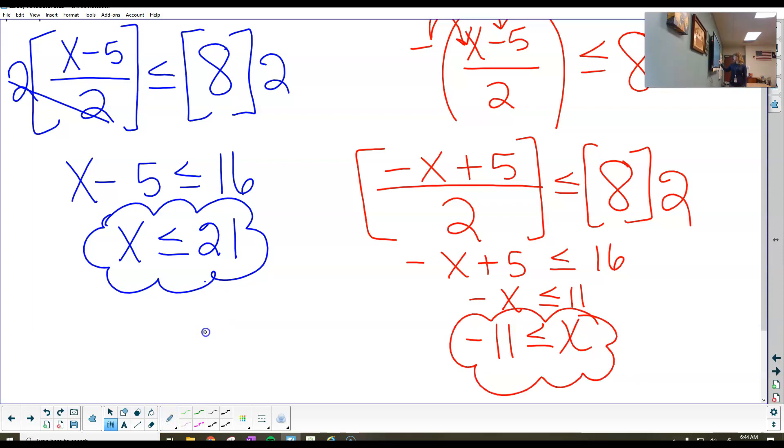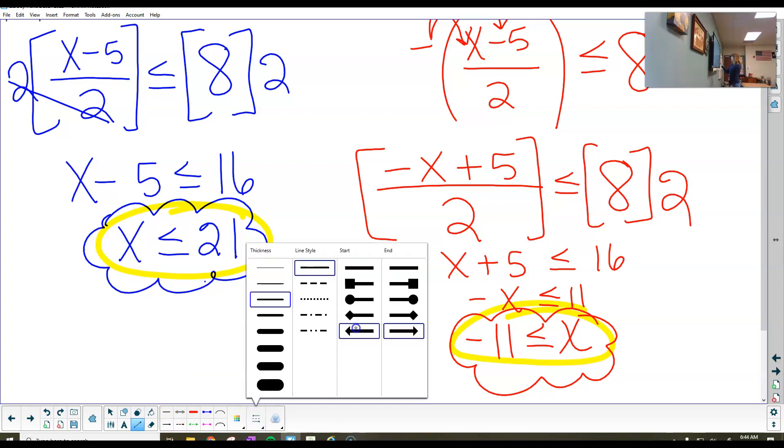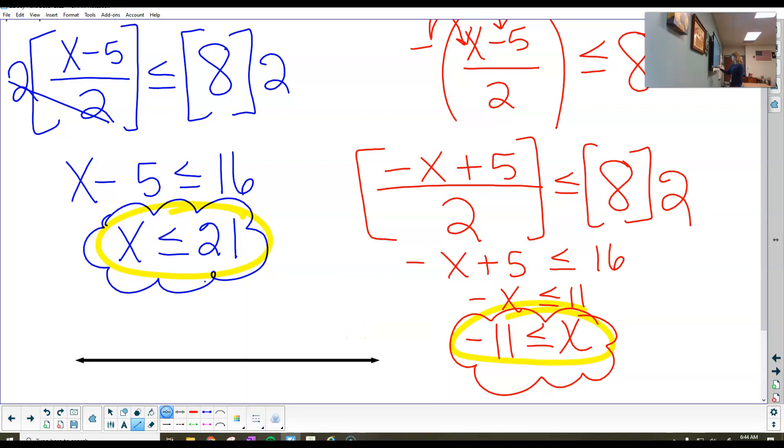So let's take a look at what's going on here. Over here on this side, x is going to be less than or equal to 21. And then when we solve for the opposite, we needed our x values to be greater than or equal to negative 11. So if I put this on a number line, we would have zero here.